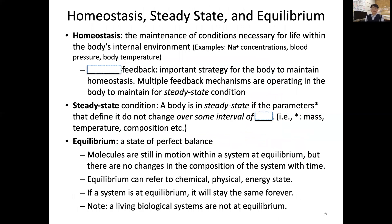Our body is a biological system, which is like a machine, and the maintenance of our body is very important. The maintenance of conditions necessary for our life within our body's internal environment — for example, sodium concentration, blood pressure, and body temperature — need to be consistently maintained. That property we call homeostasis.